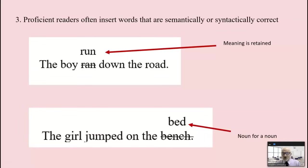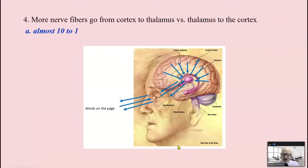Proficient readers often insert words that aren't there, but are still semantically or syntactically correct. The boy run down the road. Meaning is retained. It's semantically correct. So something's going on besides bottom up. As well, the girl jumped on the bed. Noun for a noun. That's syntactically correct. Something's going on here. And the big thing.